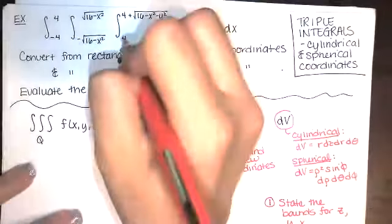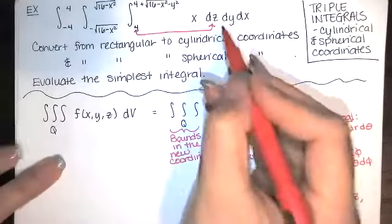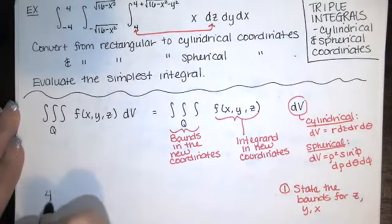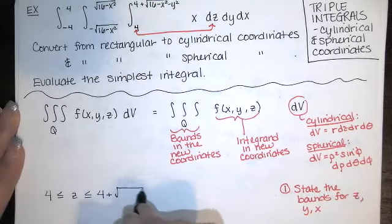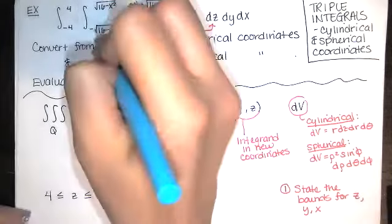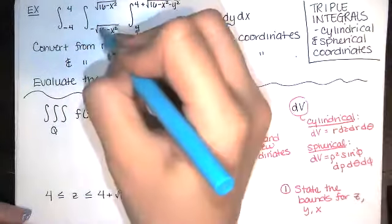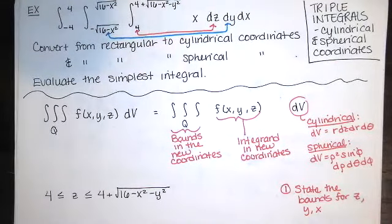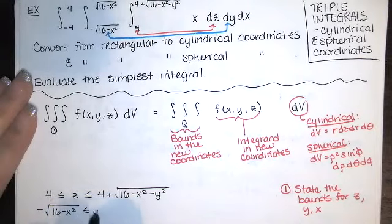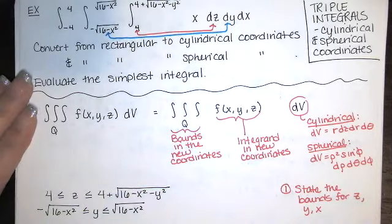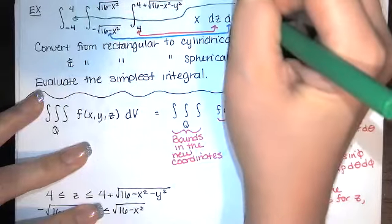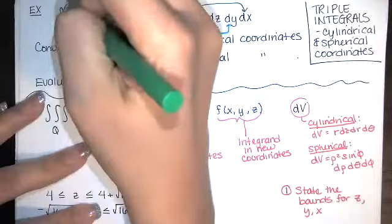The innermost bounds go with the innermost variable, so z ranges from 4 to 4 plus the square root of 16 minus x² minus y². The second set of bounds goes with the middle variable y, which goes from the negative square root of 16 minus x² to the positive square root. The outermost bounds are for x, which goes from negative four to four.